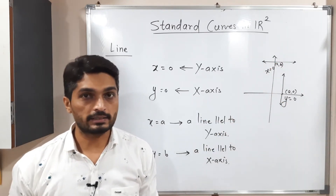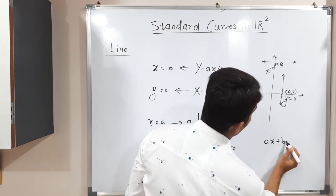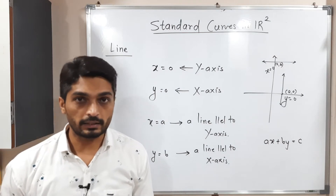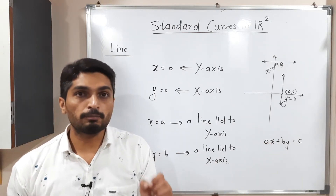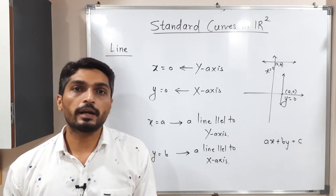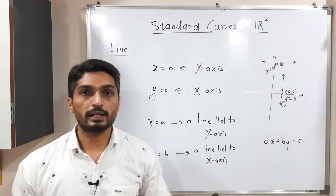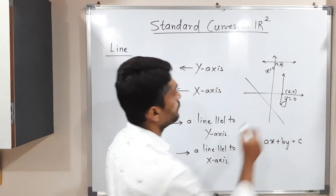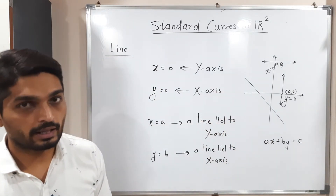These are standard lines. Also, when you have an equation like ax + by = c, this also represents a straight line. A simple logic: if the power of x is one and the power of y is also one, then one hundred percent this is the equation of a line. So these are the four standard curve types for lines.